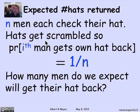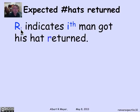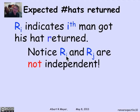How many men do we expect will get their hat back? Let r_i be the indicator variable for whether the i-th man got his hat returned. Notice that r_i and r_j are not independent — if we know r_1 got his hat back, the probability that r_2 gets his hat back changes from 1/n to 1/(n−1), since one hat is out of the picture. So these variables are dependent. Nevertheless, independence doesn't matter for linearity.